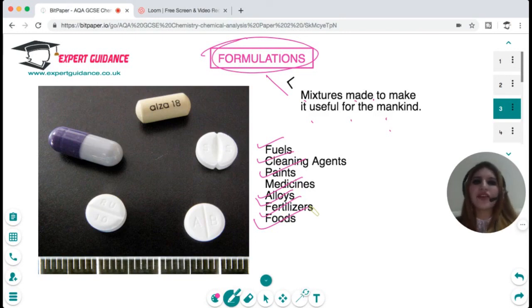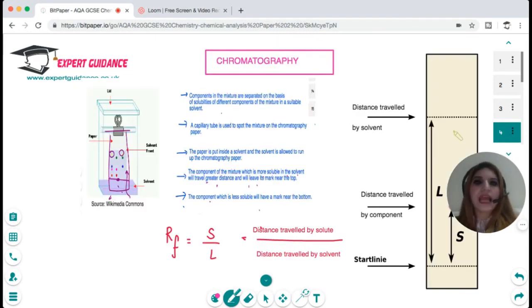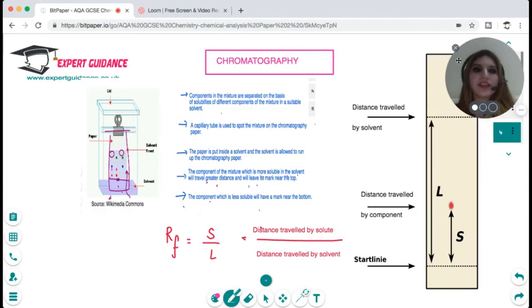Paint has a color mixed in it, a binder and a solvent. Fuel is a mixture of different hydrocarbons. Cleaning agents have a base mixed with a water absorbent. Alloys are a mixture of two or more metals. Fertilizers are a mixture of many minerals, and food is a mixture of very many components. These are the examples for formulation and they're very important for the medical and the food industry.